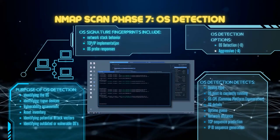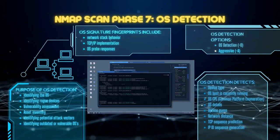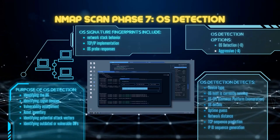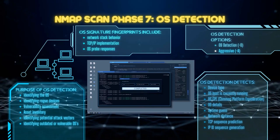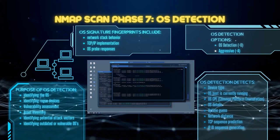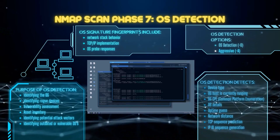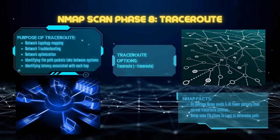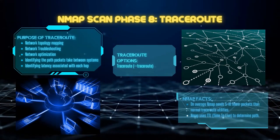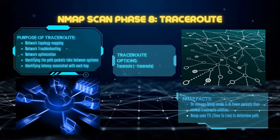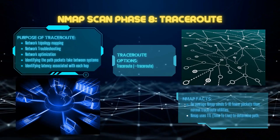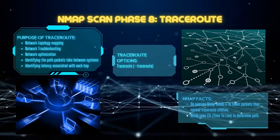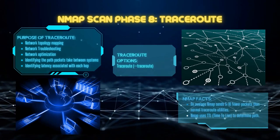Phase seven is OS detection. OS detection allows for identifying the operating system running on the remote host, providing valuable information for further analysis. When requested with the -O option, Nmap sends probes to the target and compares responses to a database of over 1,000 known operating system fingerprints, including network stack behavior, TCP/IP implementation, and responses to specific probes. Phase eight is trace route. Using the --traceroute option, you can enable Nmap's optimized trace route implementation to determine network routes to many hosts in parallel. This often involves another round of reverse DNS resolution for intermediate hosts and is helpful for troubleshooting and understanding network topology.